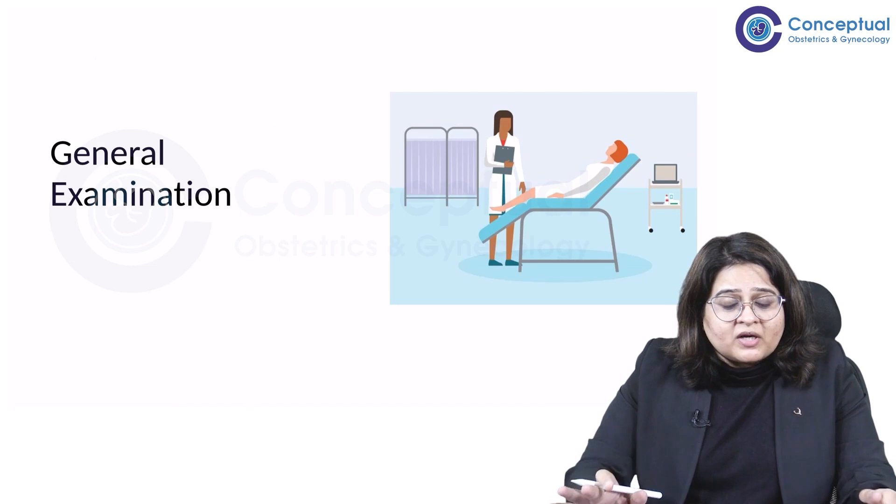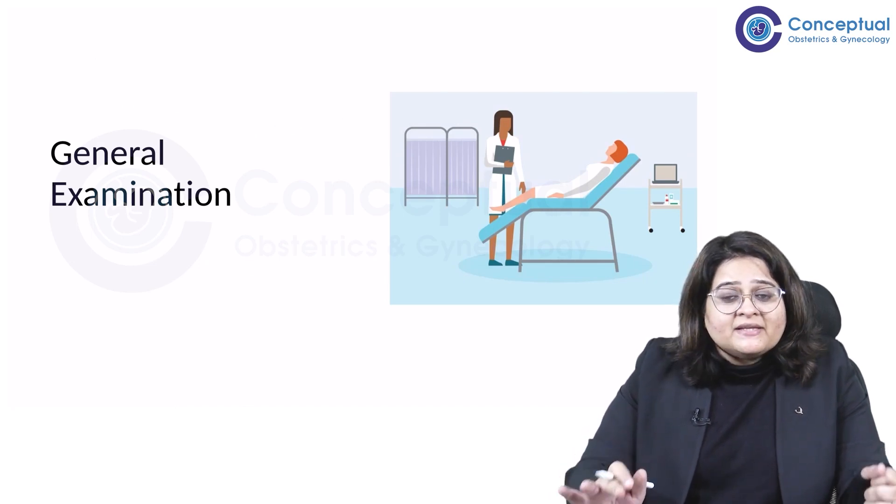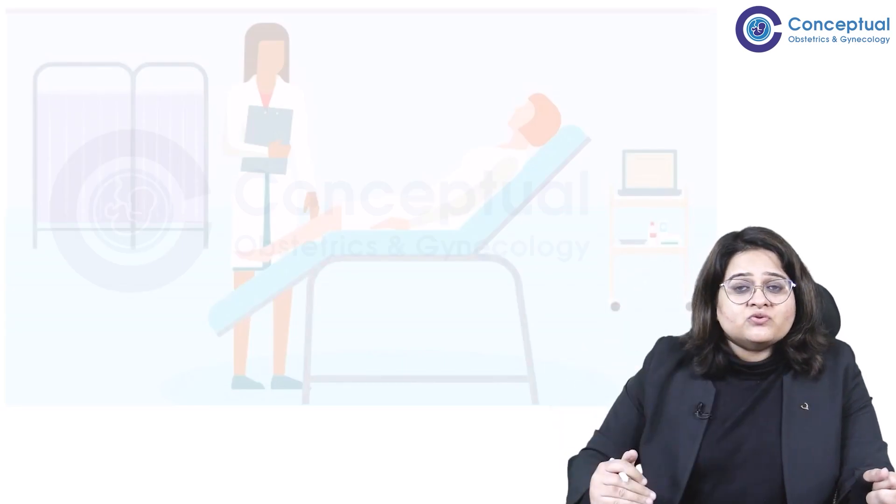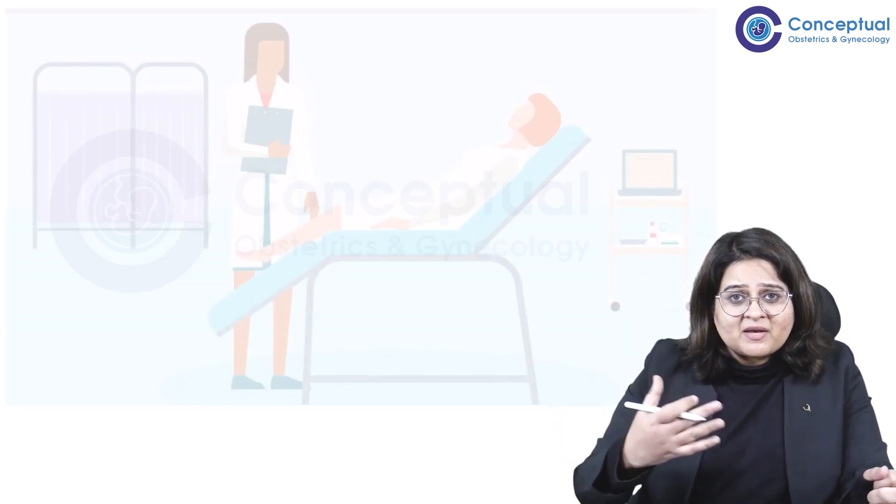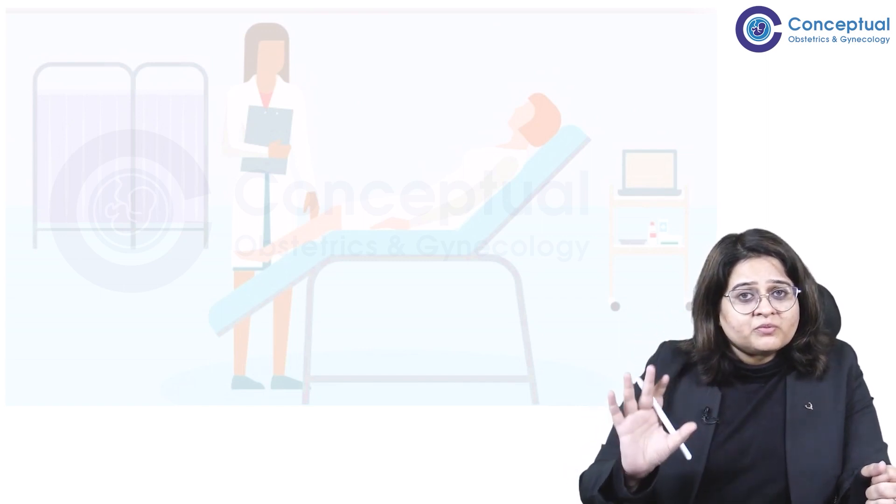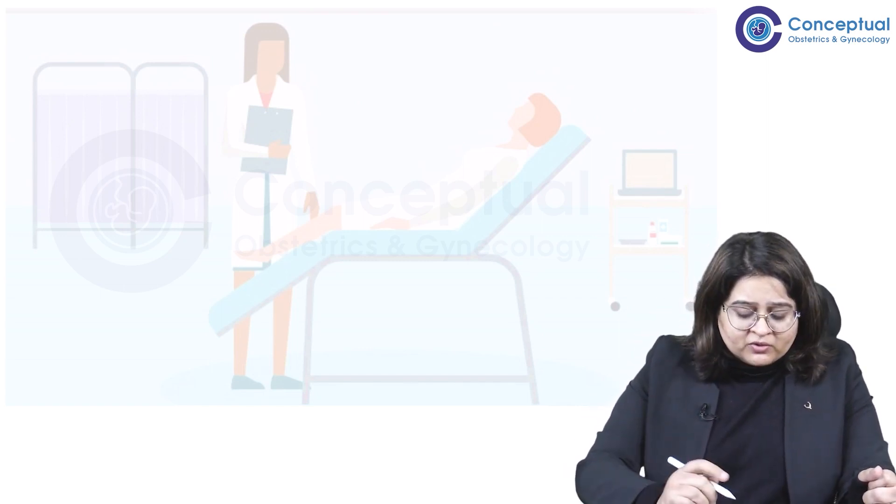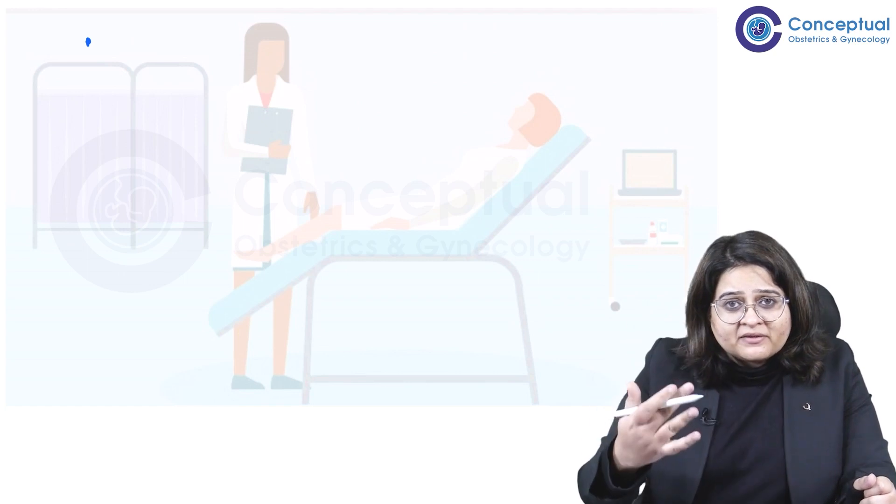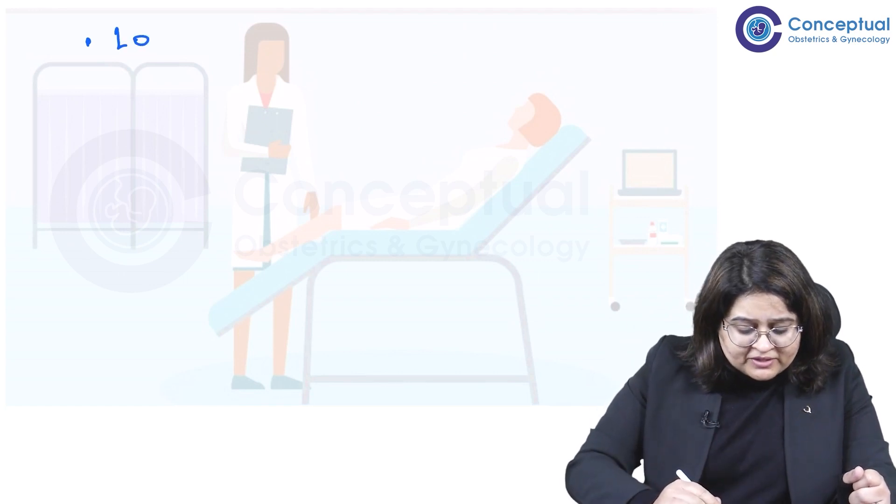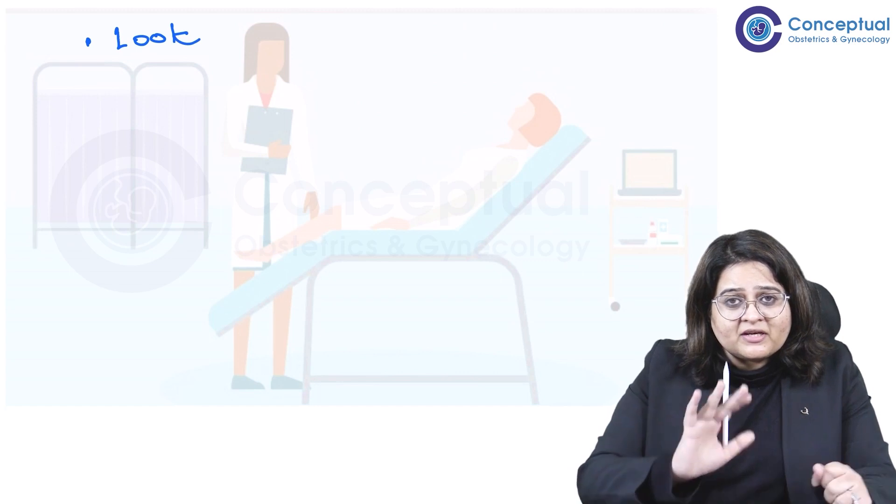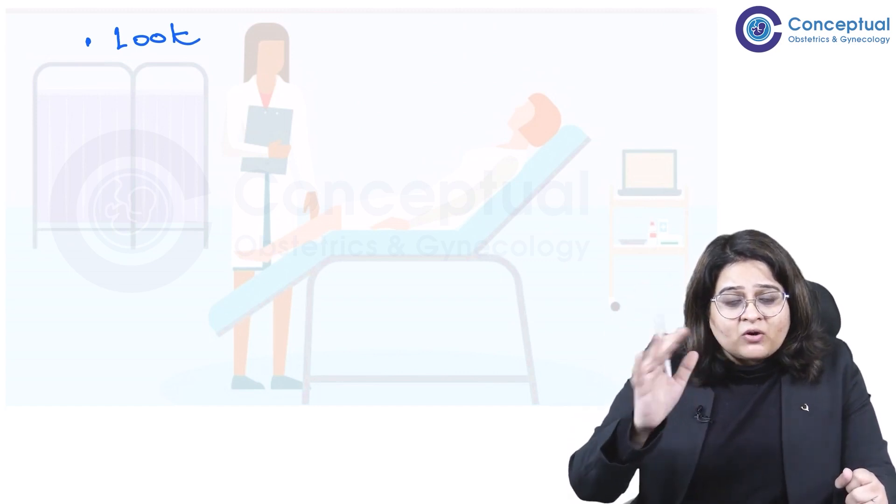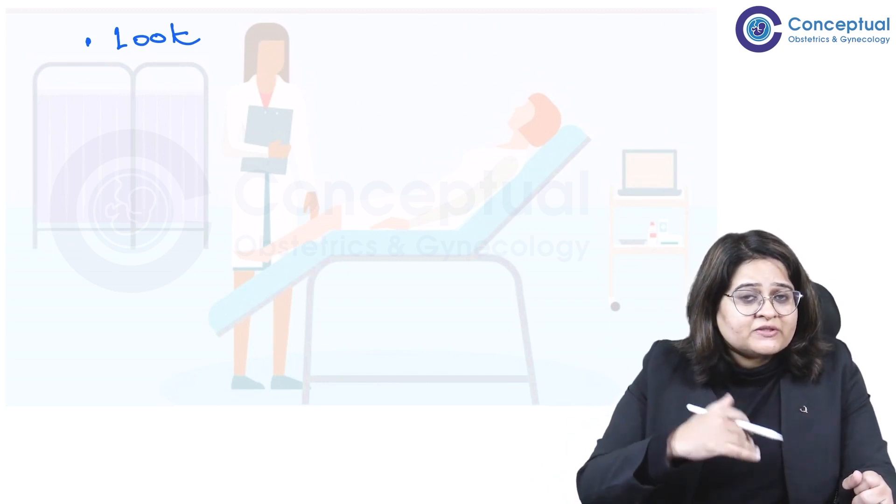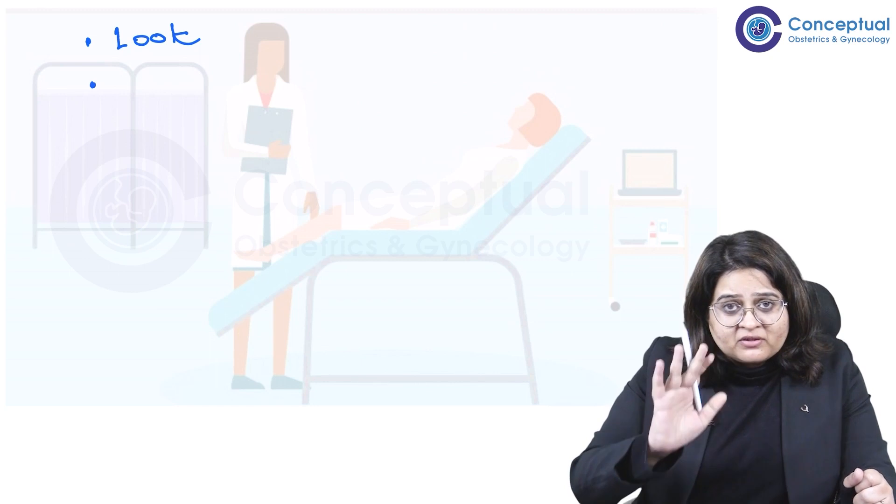So vital signs has to come as the first part of your examination, and then you move on to general examination. Now general examination, there's a full head to toe examination which some examiners expect you to tell. But there are a few important points that you should know. Firstly, first is her look. Does she look well? Does she look poorly? Does she look malnourished? So the look, what is your initial look by seeing her, that will itself tell you a lot about her, many things like her socioeconomic status or whether she's malnourished, whether she's obese. That is the general look of her.